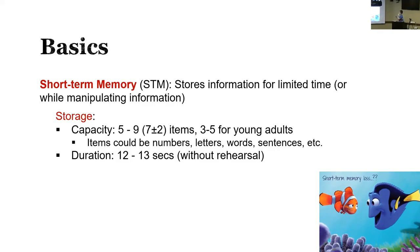That's short-term memory. We store information for a limited time while manipulating it. The storage capacity is about five to nine items — five to nine pieces of information. The magic number is seven, or three to five for young children whose brains are not as developed. You can remember the magic number seven from your phone number — I think that's why they designed phone numbers with seven digits. The duration is about 12 to 13 seconds without rehearsal.